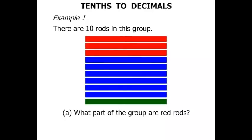In Part A we are asked what part of the group are red rods. 1, 2, 3. There are 3 out of 10. Now we can write that as a fraction. We can write that as 3 tenths. And in decimal form we write 0.3.